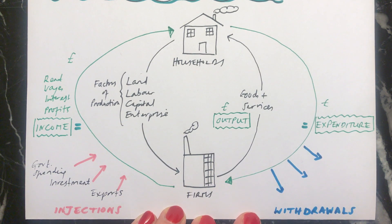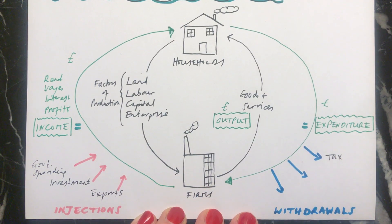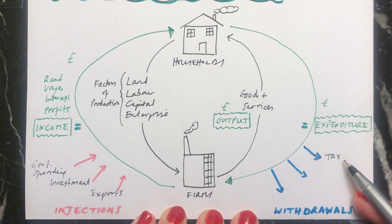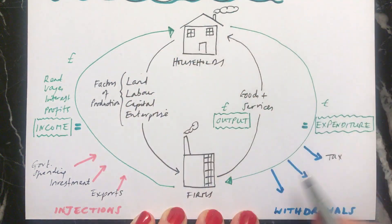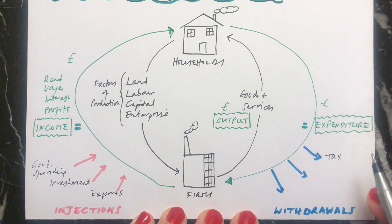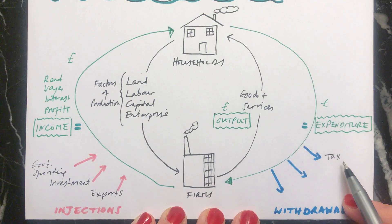The withdrawals or leakages — again, three is the magic number, there are three of these. One way that money can be withdrawn is via tax. If the government applies taxes to goods and services — perhaps an indirect tax, or direct taxes such as income tax or corporation tax — money leaves the circular flow because people or businesses are paying tax, and less money will now be going round.